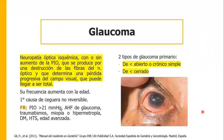El glaucoma es una neuropatía óptica isquémica con o sin aumento de la presión intraocular. Antes se pensaba que era solo por aumento de la presión intraocular, pero hoy sabemos que puede no estar aumentada. Se produce por destrucción de las fibras del nervio óptico y determina una pérdida progresiva del campo visual que puede llegar a ser total. Cuando el nervio óptico entra al ojo a través de la lámina cribosa sufre presión, al igual que los vasos que lo acompañan, y de ahí la isquemia.